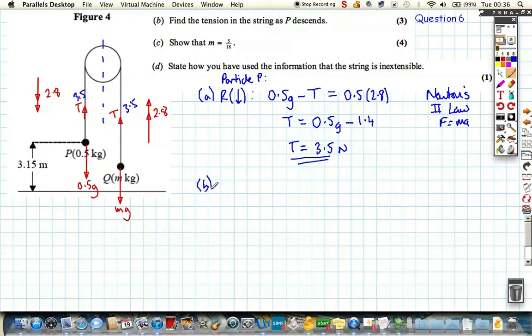For part B, show that M is equal to 5/18. We considered particle P, let's consider now particle Q and do the same thing. Let's resolve in the direction that Q is going to move. Resolve upwards as our positive direction. Tension is acting upwards, Mg is acting downwards. It's equal to the mass which is M times acceleration which is 2.8, again using Newton's second law.